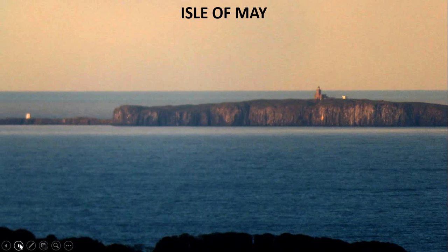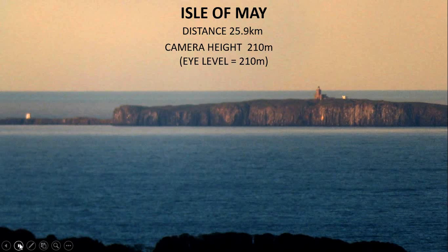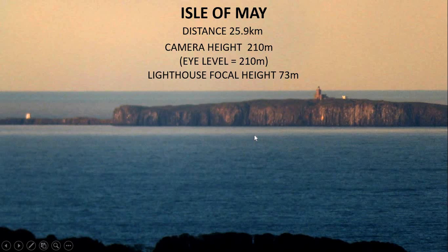This is the Isle of May in the Firth of Forth estuary. Its distance from the camera is 25.9 kilometres. The camera height is 210 metres on Traprain Law in East Lothian, which means eye level is 210 metres. The lighthouse that you can see here on the top of the Isle of May has a focal height of 73 metres — that is, where the light is, 73 metres above sea level.